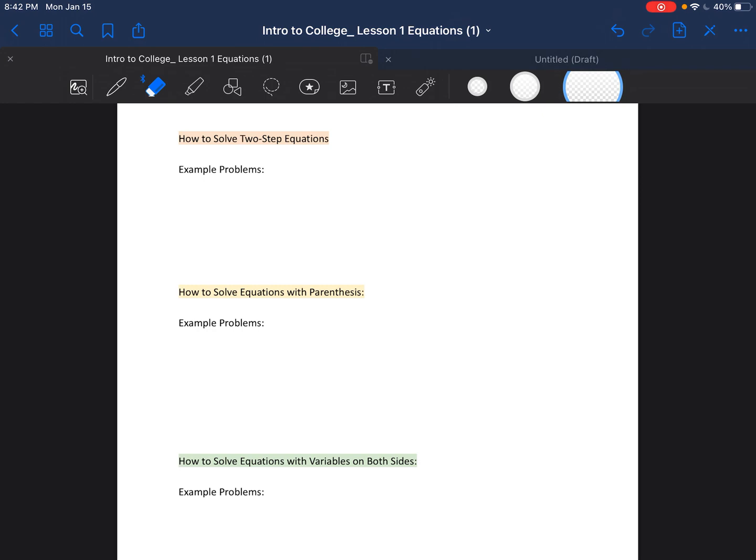So we're going to go to how to solve equations with parentheses. The only difference between what we were doing and what we're doing in this equation is that you're going to see parentheses in the equation. So I'll give you an example: 2 times the quantity x plus 5 is equal to 50. When we are doing anything that has a parenthesis, the parenthesis just helps us to know that we're going to have to distribute. So I'm going to write that parentheses equals distribute.